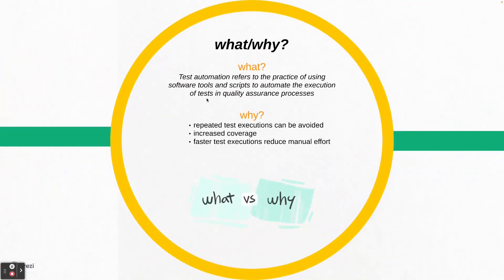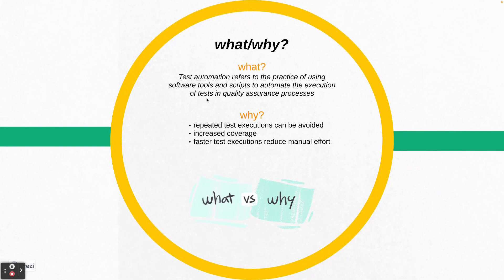As you can see, in what it says: test automation refers to the practice of using software tools and scripts to automate the execution of tests in the QA process, or quality assurance process. All in all, your test cases that you are executing manually, when they are being executed by a machine — that is when automation happens, and that is referred to as test automation or automation testing.